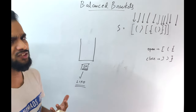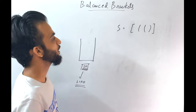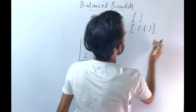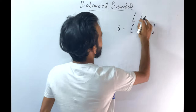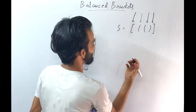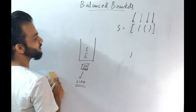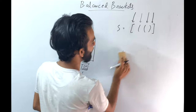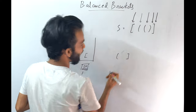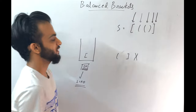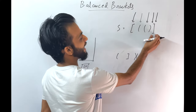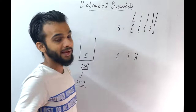Let's check one more example where the string is not balanced. At first, this is an opening bracket — whenever it's an opening, put it into your stack. Next, opening again — put it into your stack. Next, opening again — put it into your stack. Next, a closing bracket — take out the last element of the stack and check if they are opposites. They are opposites, so I can move to the next. The next one is a closing. So I take the top of the stack, and these are not opposite. If they are not opposite, you can return saying it's not balanced. It's not balanced because this guy did not find its correct closing.